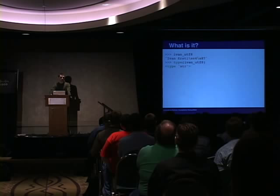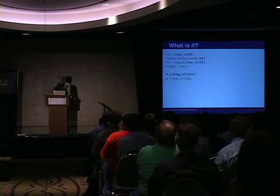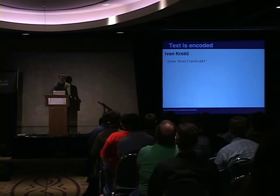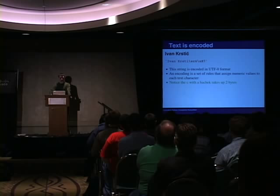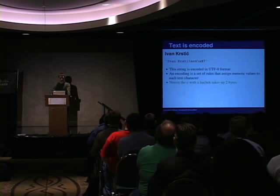One byte is made of bits, and a bit is the smallest unit of measure. So this text is encoded. An encoding is pretty much just what it sounds like — it's a set of rules that assign numeric values to each text character. This C here is a small Latin C with an acute accent, commonly referred to in Croatian as a C with a hatchet. You'll see here that it takes two bytes. Other encodings might use more or fewer bytes.